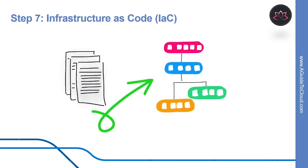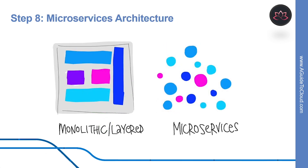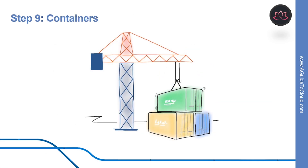Infrastructure as code is a practice which enables the automation and validation of creation and teardown of environments, helping deliver secure and stable application hosting platforms. Step eight is microservices architecture, which isolates business use cases into small reusable services that communicate via interface contracts, enabling scalability and efficiency. Containers are the next evolution in virtualization — much more lightweight than virtual machines, allowing much faster hydration and easily configured from files.